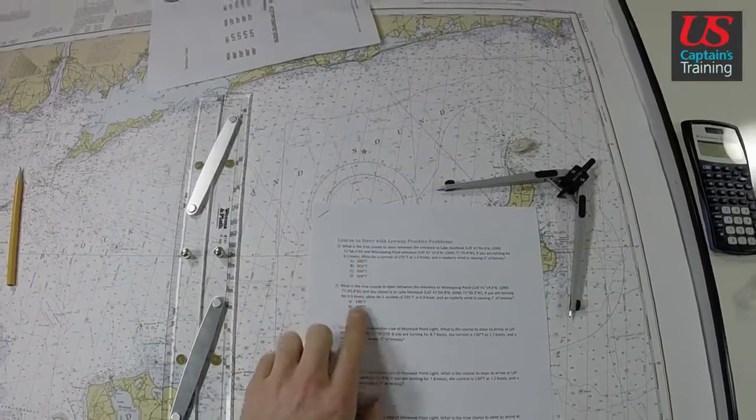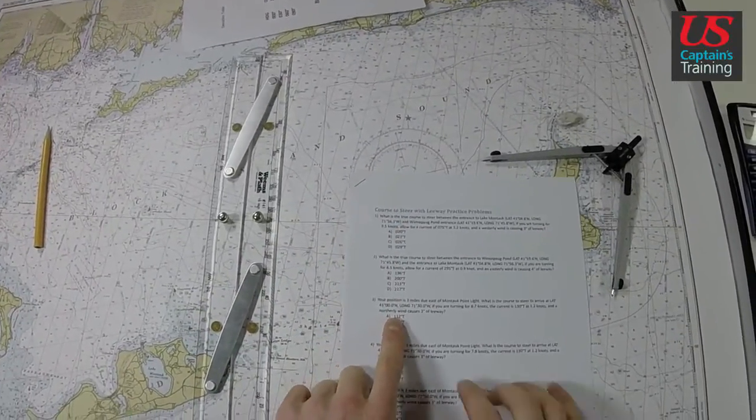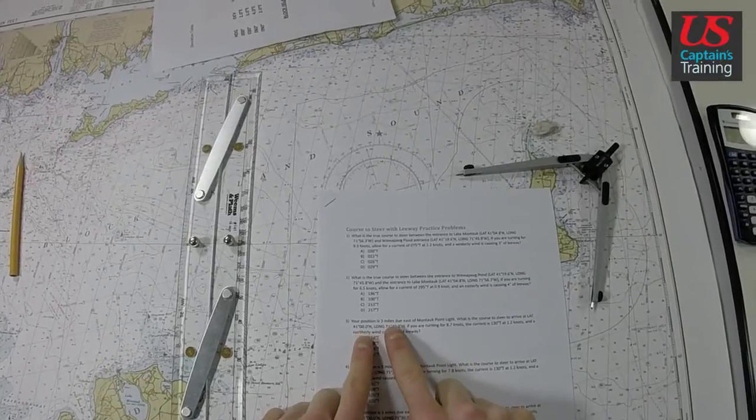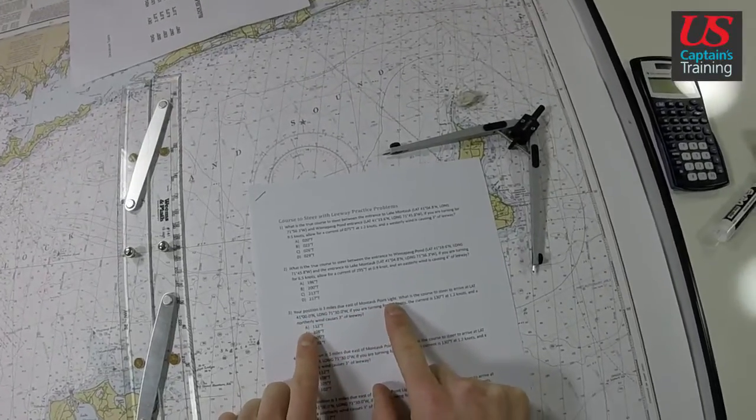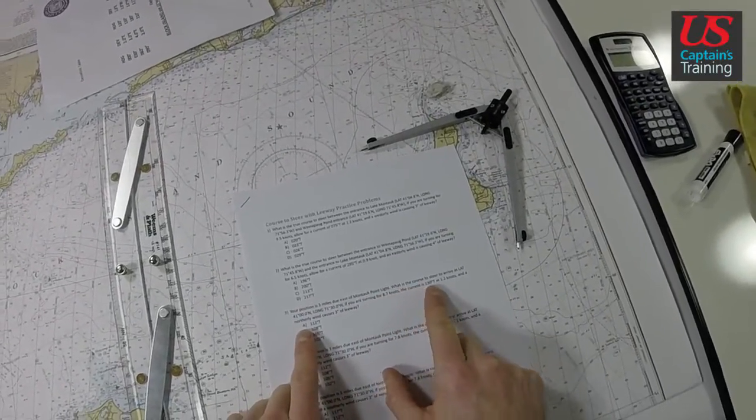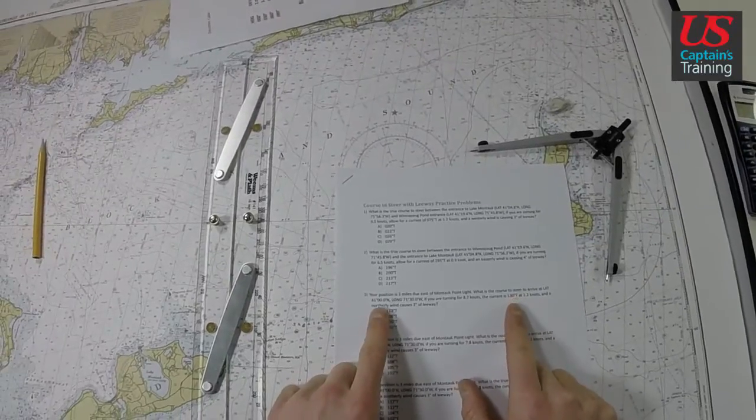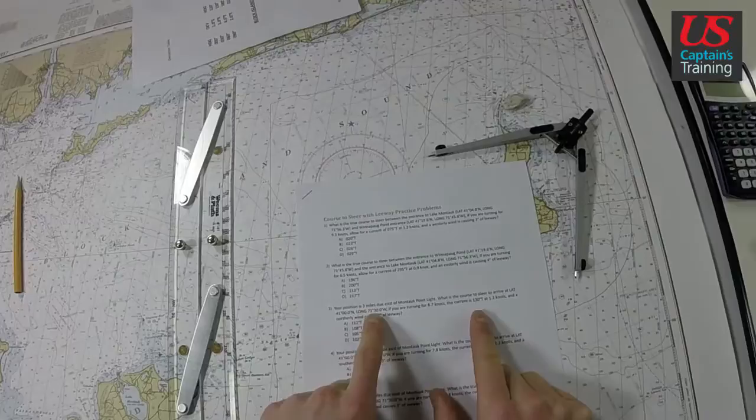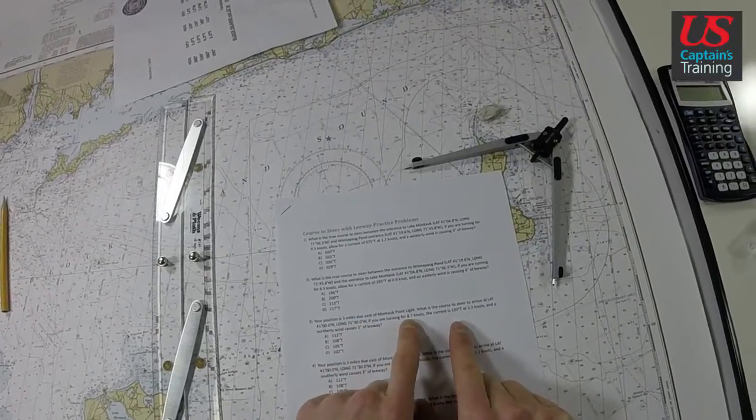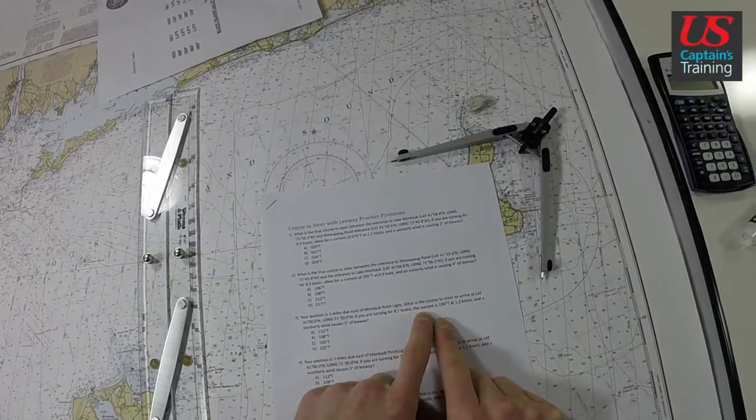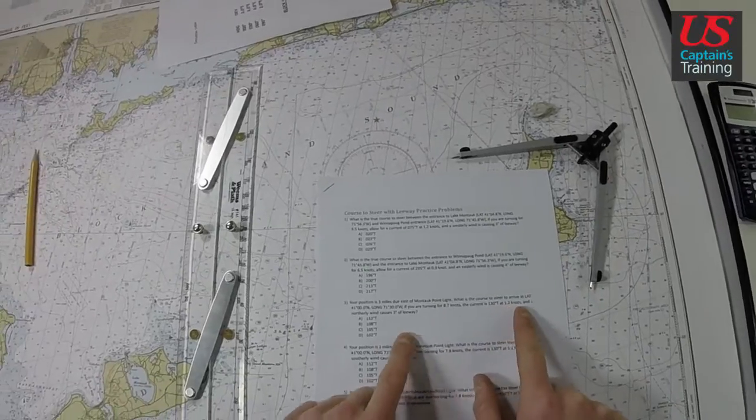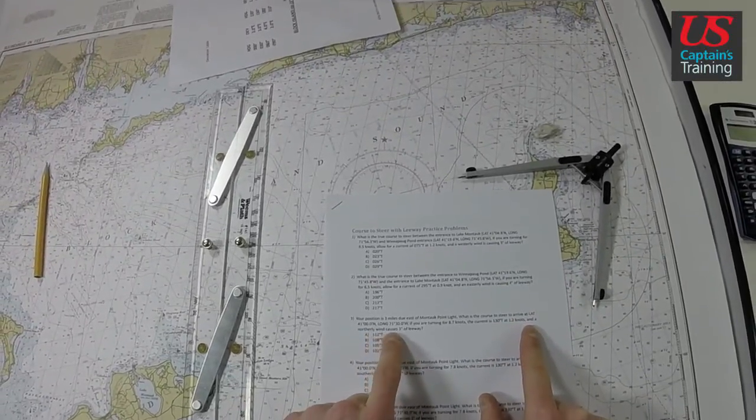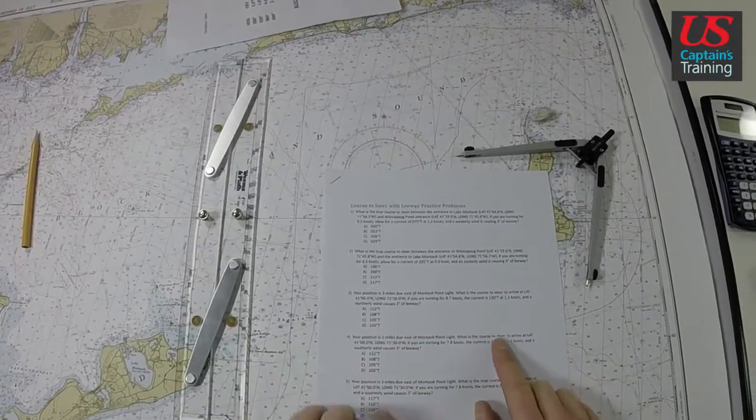Course to steer with leeway practice problem three: Your position is three miles due east of Montauk Point Light. What is the course to steer to arrive at latitude 41°, longitude 71°30', if you're turning 8.7 knots and the current is 130° at 1.2 knots, and a northerly wind causes three degrees of leeway?